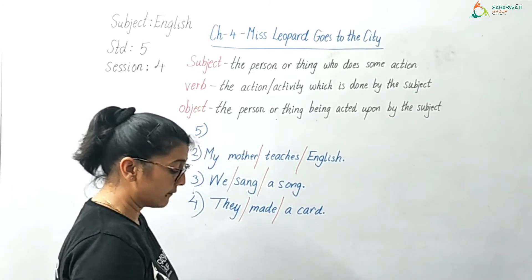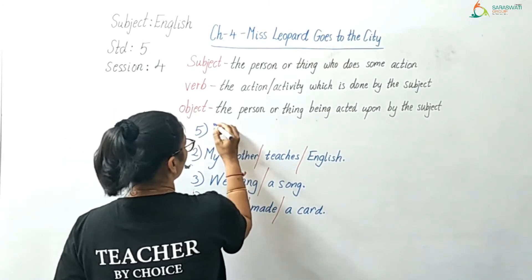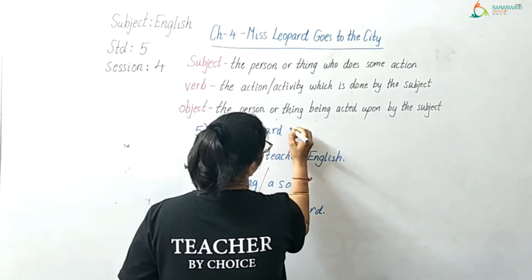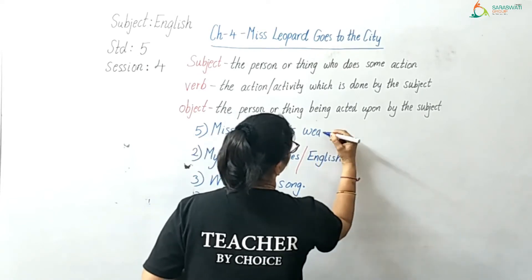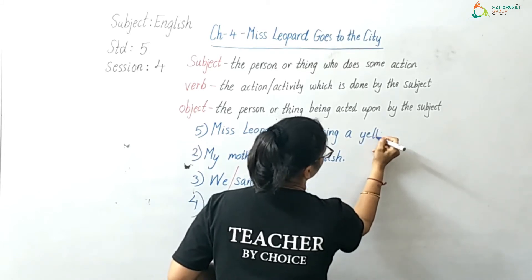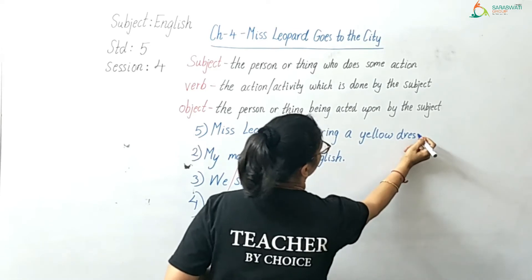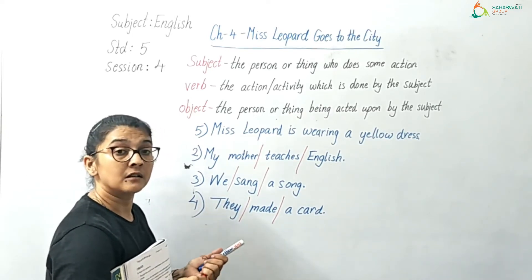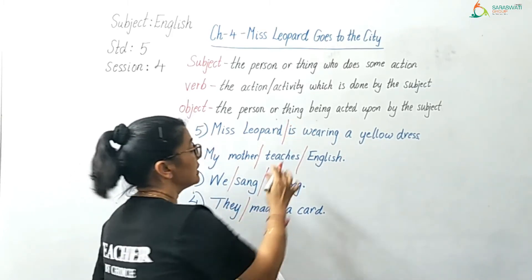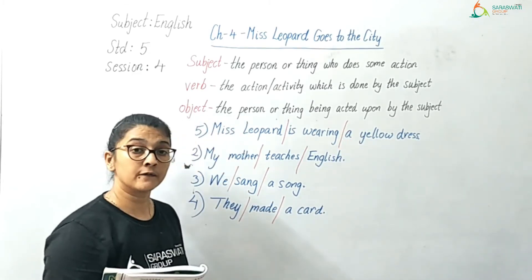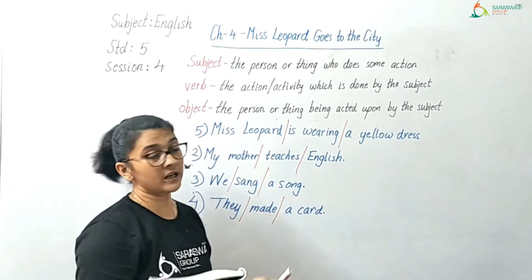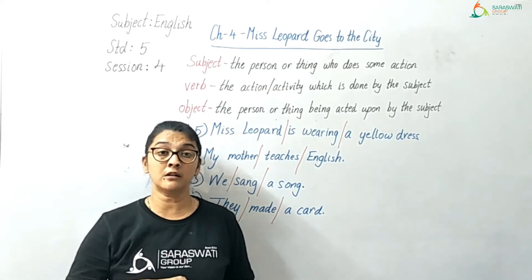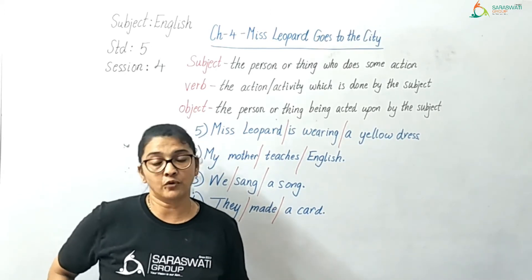The fifth sentence: Miss Leopard is wearing a yellow dress. Who is wearing a yellow dress? Miss Leopard. Miss Leopard is the subject. 'Is wearing' is the verb. And 'a yellow dress' — that is the object. I suppose now you are clear with the subject, verb, and object of the sentence.